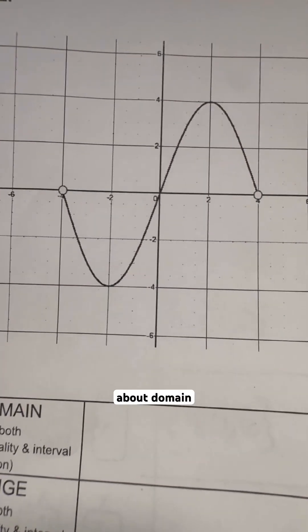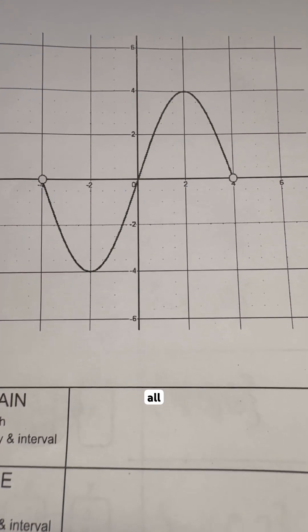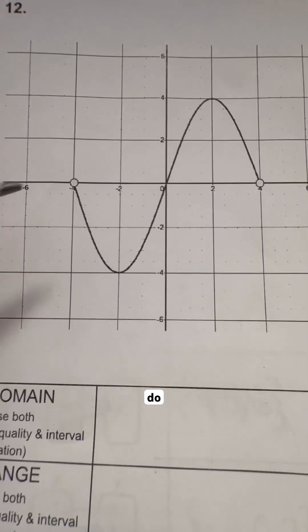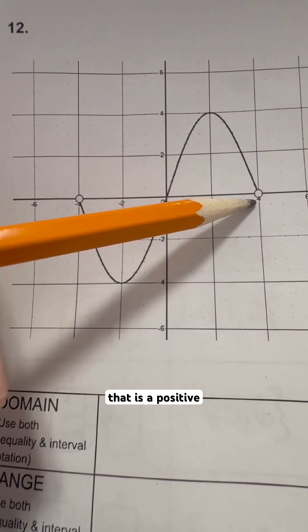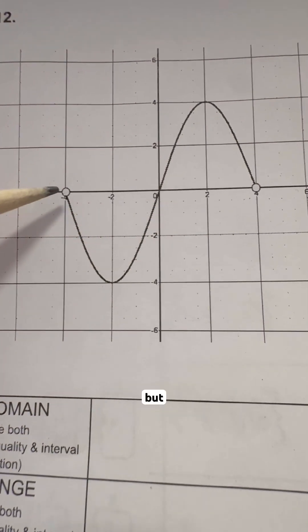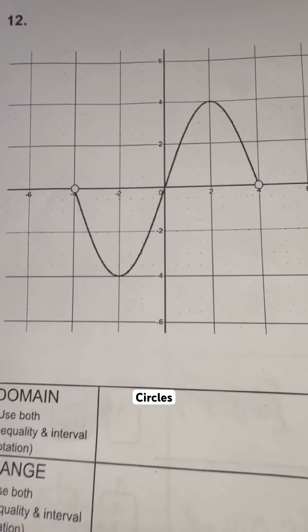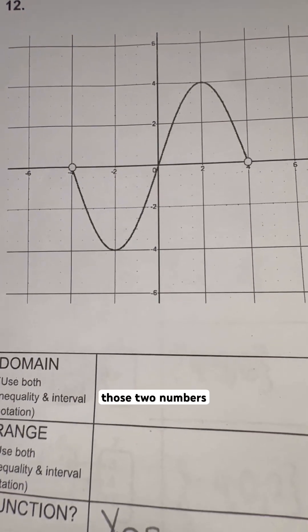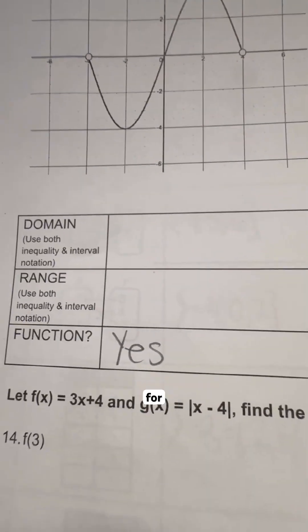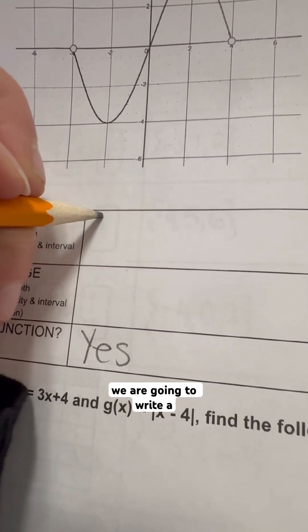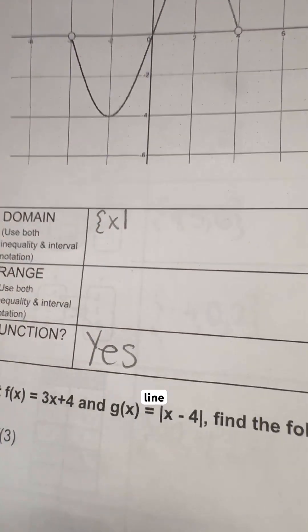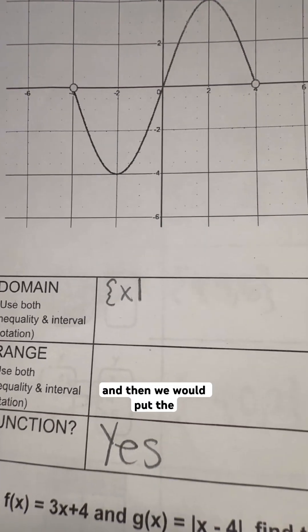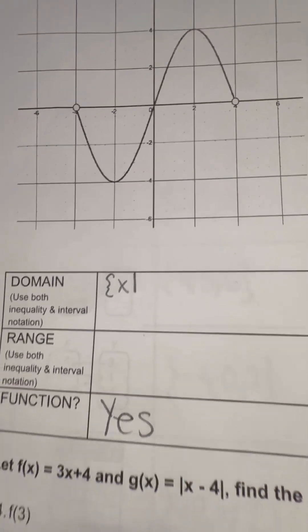Now we're talking about domain. It is all of our x values. All of our x values range anywhere from negative four to positive four. So they go throughout, but because these are very clearly open circles, they are not including those two numbers. So when we write our inequality statement, we're going to write a curly set of brackets, x, and then we use this vertical line that means such that, and then we would put the lower number, which is negative four in this case.